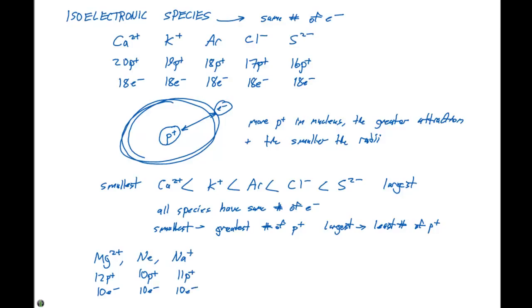So we see that this is an isoelectronic series where each of these have 10 electrons. So the smallest is going to be the species with the most number of protons, which is magnesium two plus, second is sodium plus, and the largest is going to be neon.